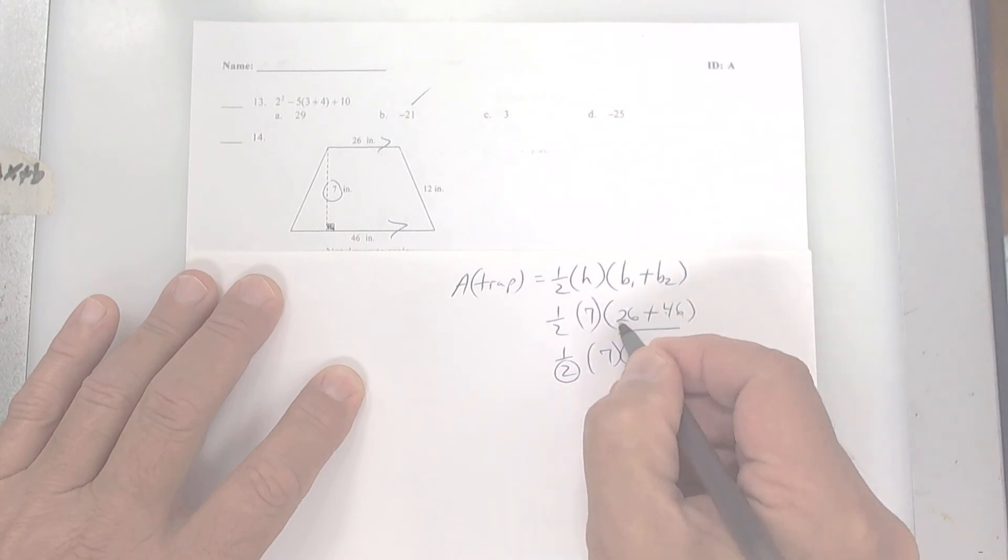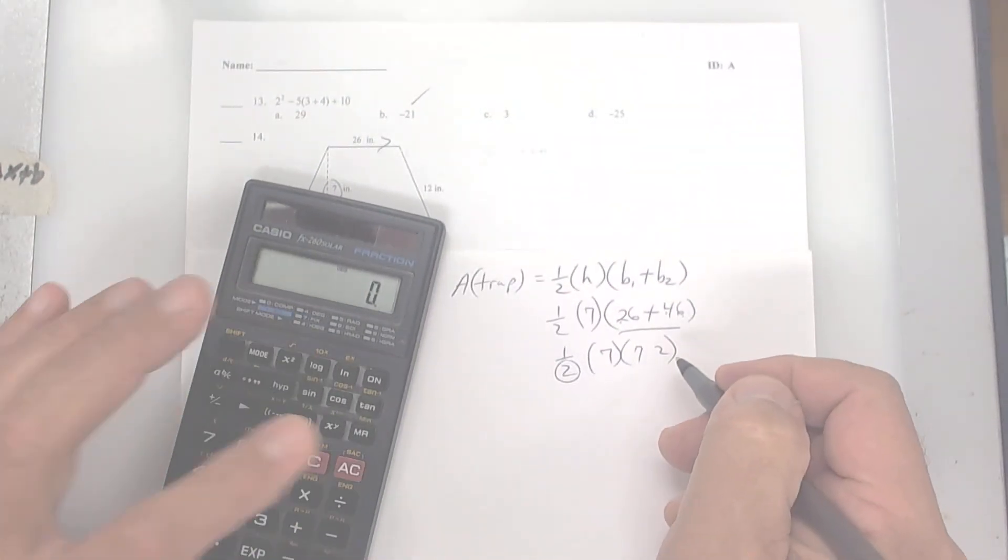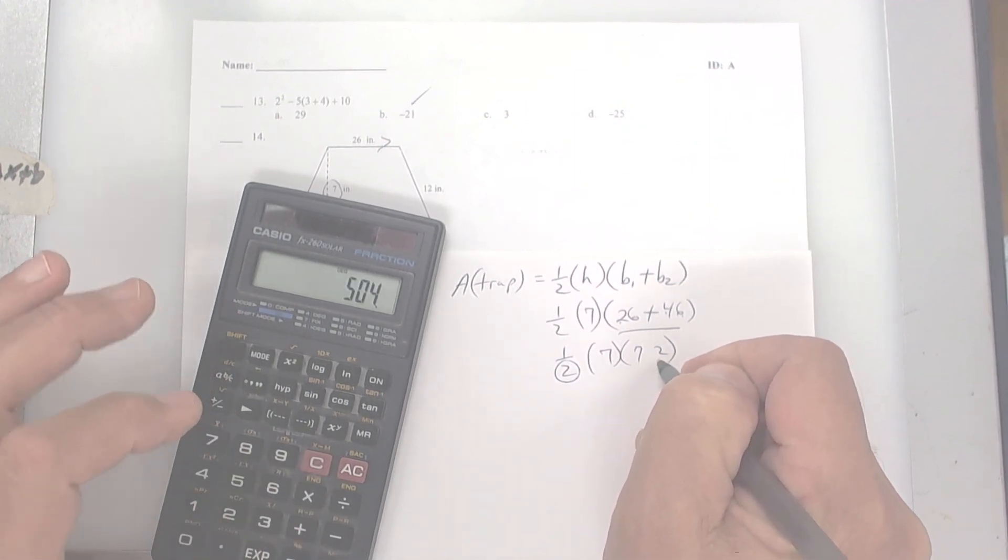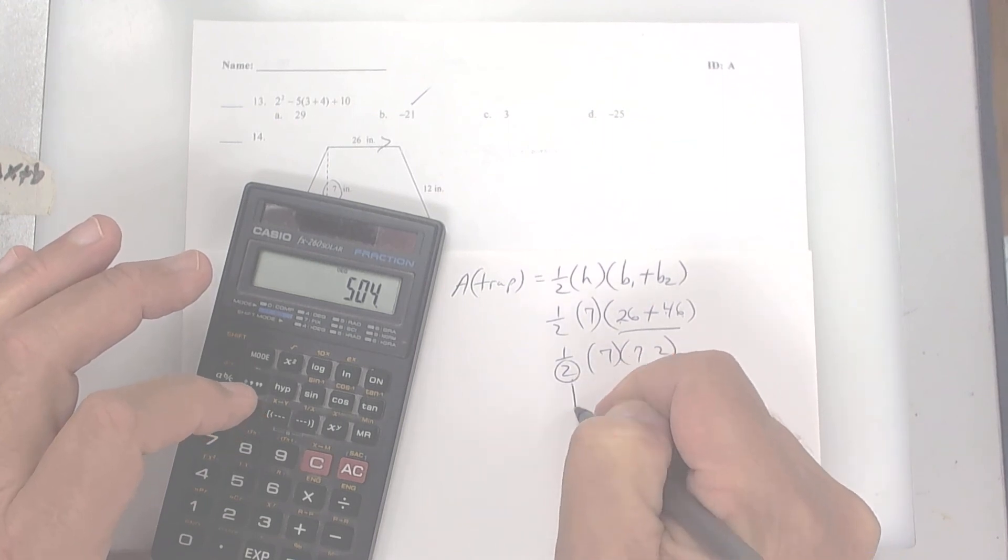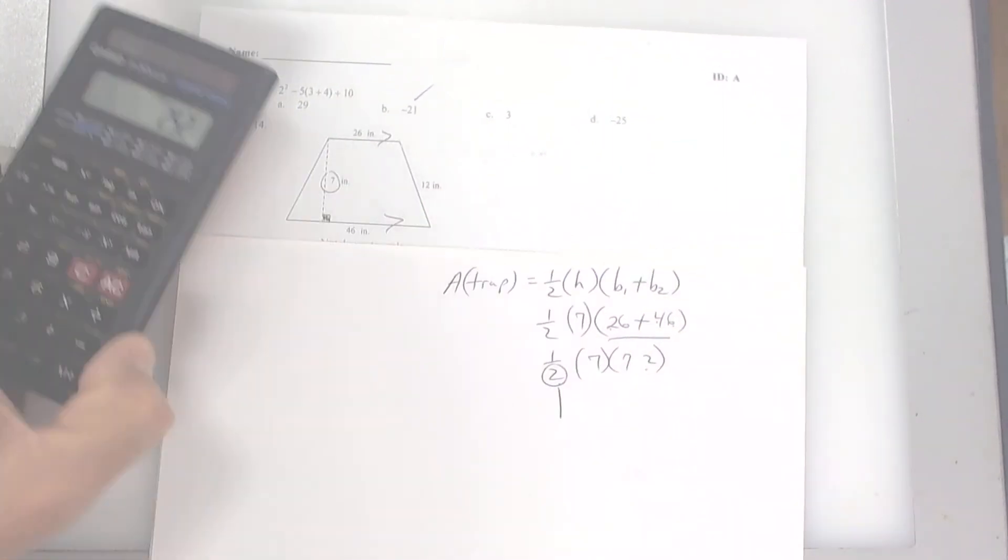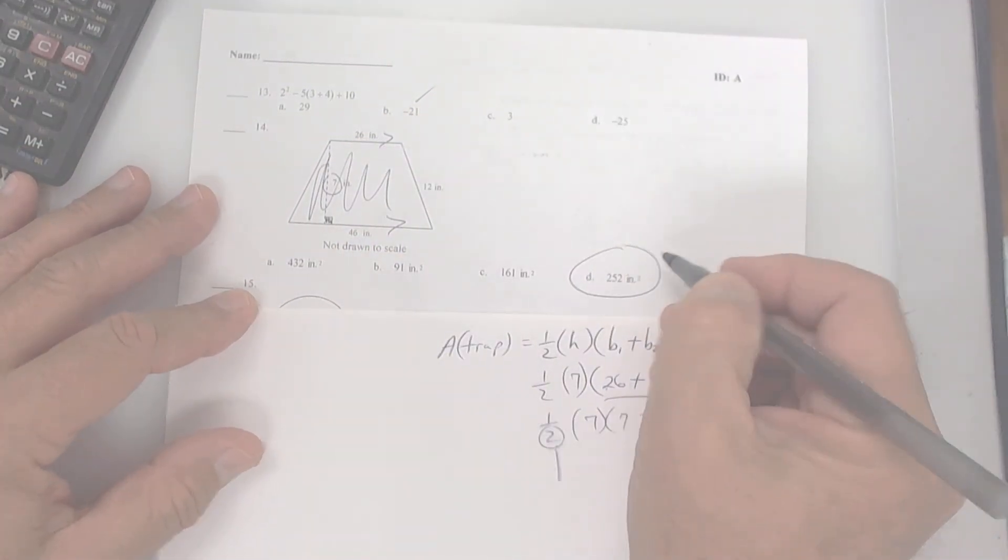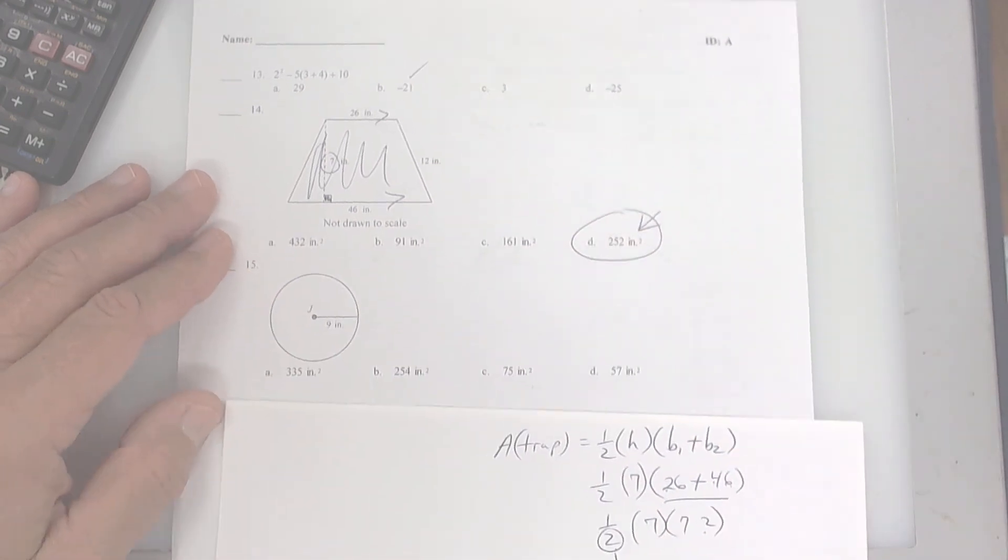So it's going to be 7 times whatever the heck that is. That's a 2. That's 672, I think it is. So clear your calculator out. Press 72 times 7. Press equals. And then the last thing I would do is divide by 2. So divide it by 2, and I get 252. So the area of this trapezoid is 252, and area is square inches.